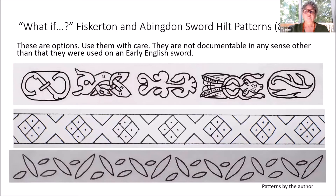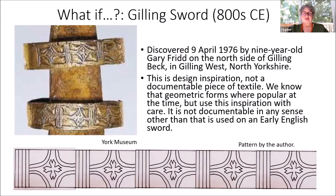Here are the patterns I made from some sword hilts — options for you. Use them with care; be upfront that they're not documentable as textiles but are documentable as art of the period you're using for inspiration. The Gilling sword is another example found by a little boy, from the 800s, towards the end of the early English period. This is design inspiration only — not a documentable piece of textile. We know geometric forms were very popular at the time, so use it, but use it with care.